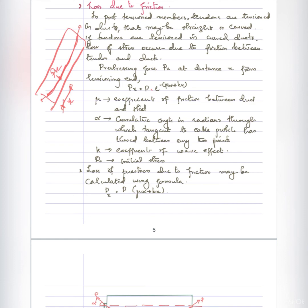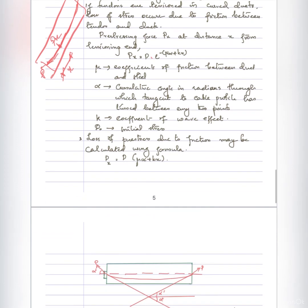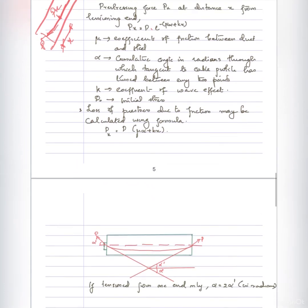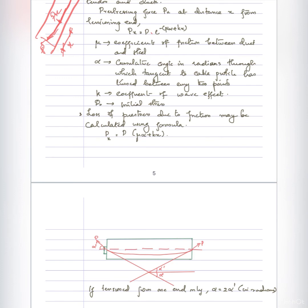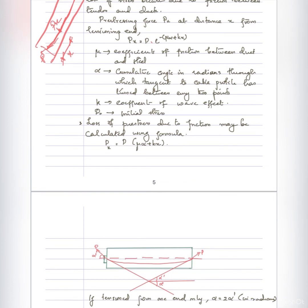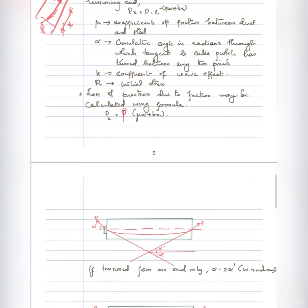The prestressing force Px equals P₀ multiplied by e raised to minus (mu·alpha plus k·x), where mu is the coefficient of friction between the duct and steel, alpha is the cumulative angle in radians through which the tangent to the cable profile has turned between the two points, k is the coefficient of wave effect, and P₀ is the initial prestressing force. The loss of prestress due to friction equals P₀ minus Px, expressed as P·(mu·alpha plus k·x).